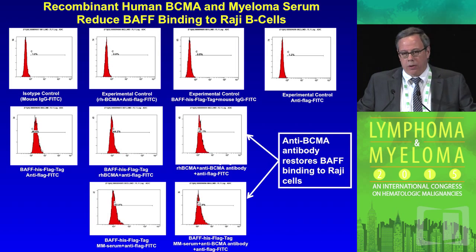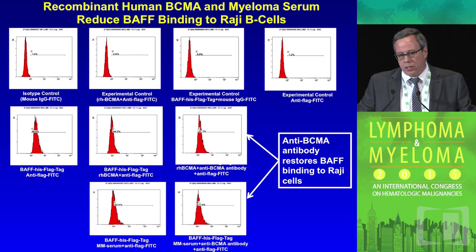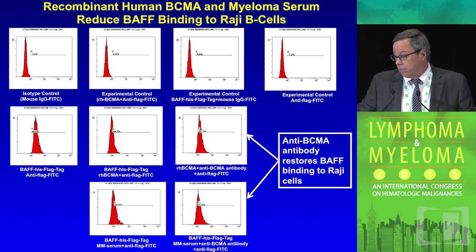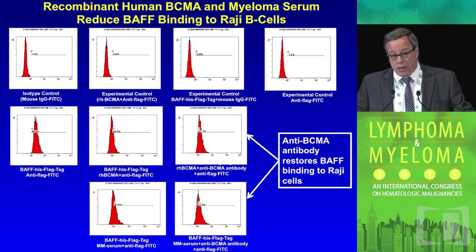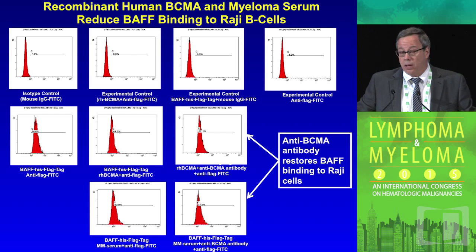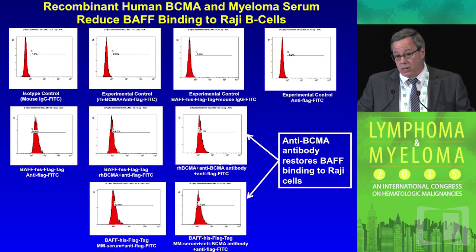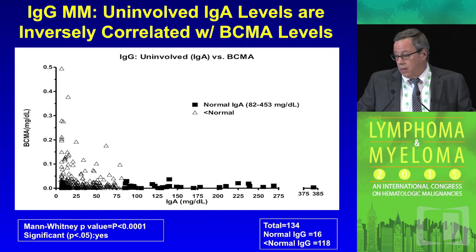Using RAGI B cells, we showed that if you take myeloma serum and mix it with RAGI B cells in the presence of an anti-BCMA antibody, you restore BAFF binding. In the absence of the antibody, human myeloma serum prevents BAFF from binding to the RAGI B cells. So we have a very direct effect: human serum containing high levels of BCMA prevents BAFF from binding to B cells, and an anti-BCMA antibody will reverse that effect.